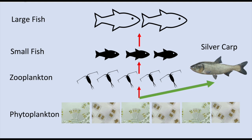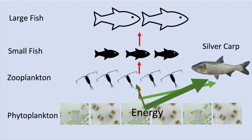Now let's introduce silver carp into this food chain. Silver carp also feed on phytoplankton, and they sometimes do so more efficiently than zooplankton within the freshwater ecosystem. This means that more phytoplankton biomass will be eaten by silver carp rather than zooplankton. This also means that less energy from phytoplankton will work its way up the food chain to smaller and then larger game fish. At this point in the invasion, the food web is disrupted, but both silver carp and zooplankton are still competing for phytoplankton in the system.